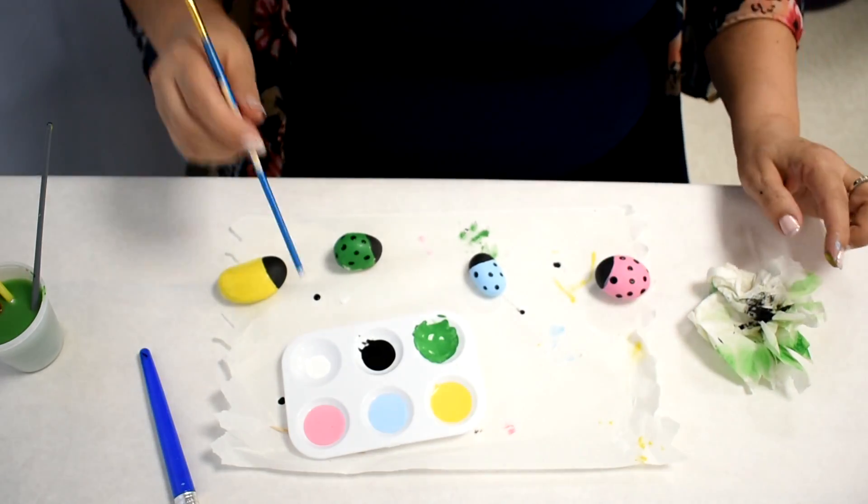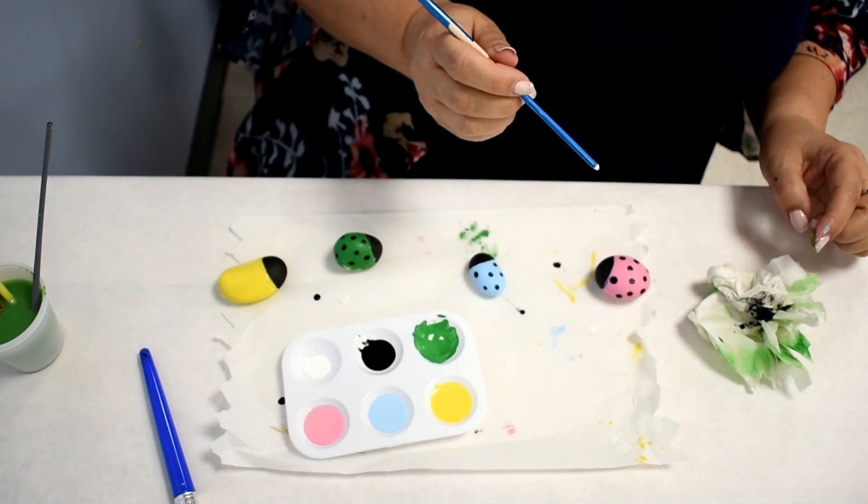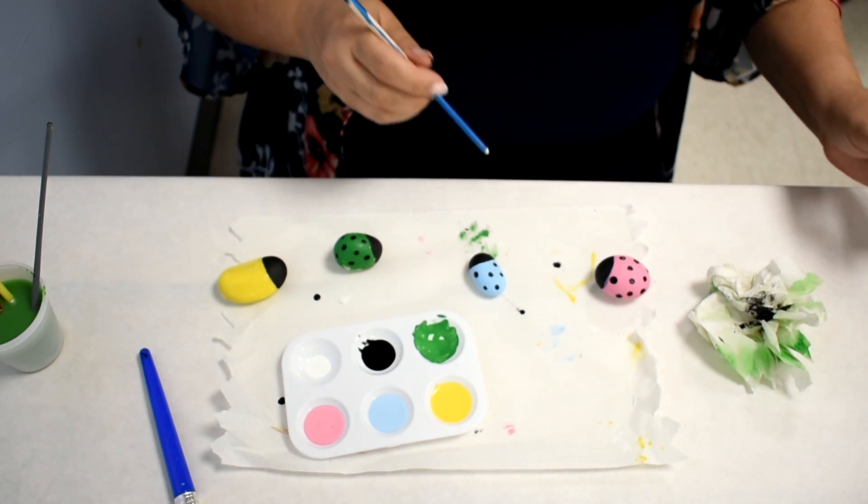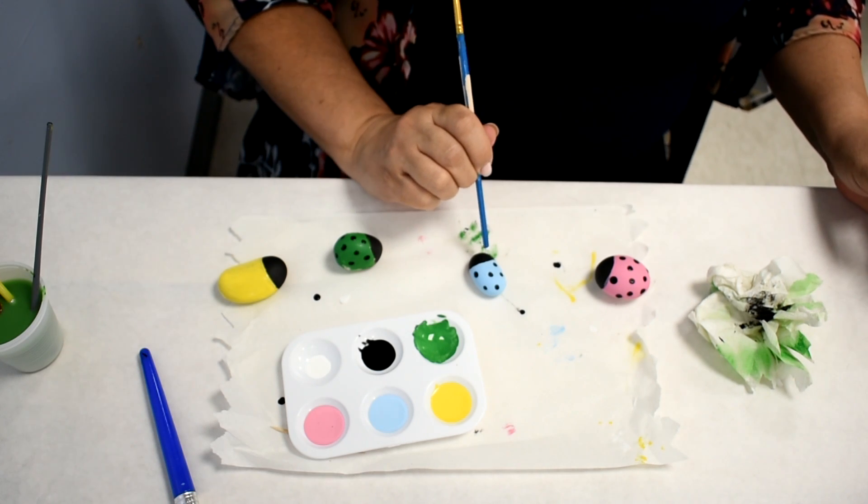To do the eyes I use the top of the brush or you can use a crayon pencil. Do the black dots inside the white.